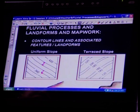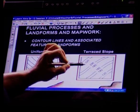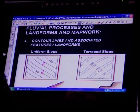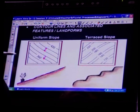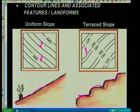Then we look at where the lines alternate: close, far apart, close, far apart — steep, gentle, steep, gentle all the way through. That is your terrace slope — it has terraces on it. You can see the steep and gentle pattern: these are the gentle sections and these are the steep sections.